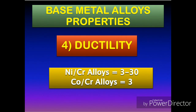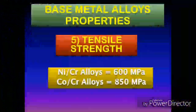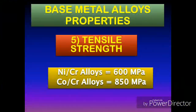Comparing ductility, the higher range in the case of nickel-chromium casting alloy suggests that more forces can be applied while burnishing, whereas in the case of cobalt-chromium casting alloy, the alloy may fracture in cases where adjustments are required. Next is the strength of the base metal casting alloy when a tensile force is applied.